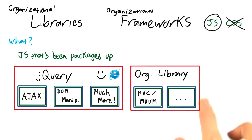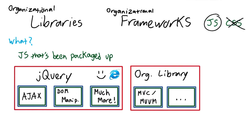There are a lot of organizational libraries out there, but they're all solving the same problem in fundamentally similar ways. They do have slight differences in organization or implementation, and that's what the documentation is for. But by now, if you understand the basics of separation of concerns, then you can understand any of these organizational libraries.